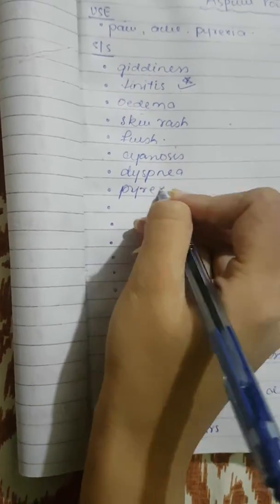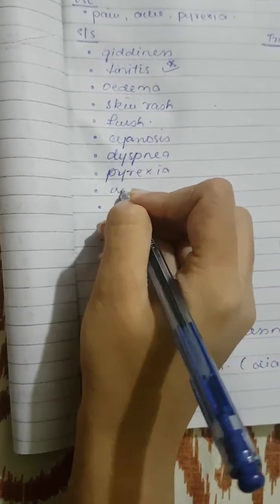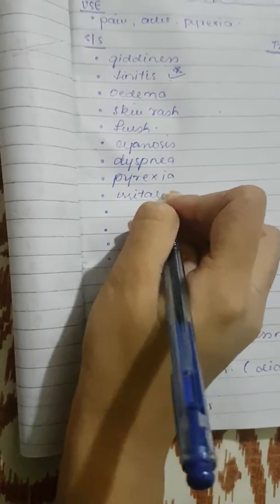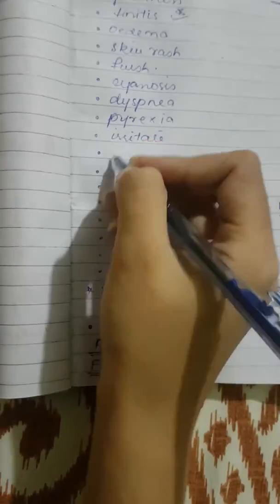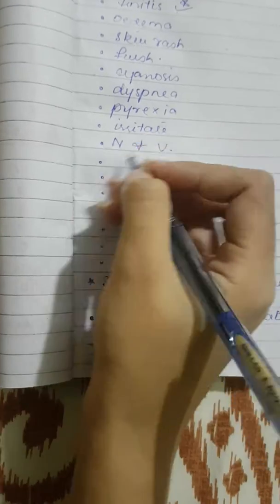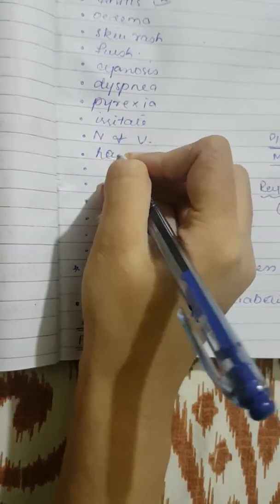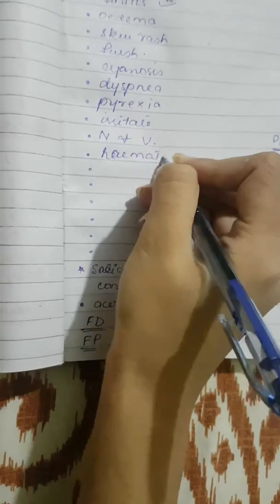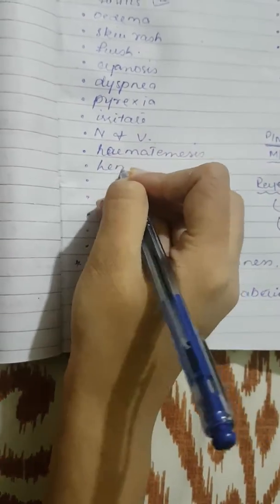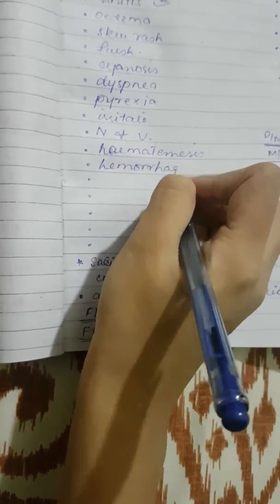It may also irritate the GIT mucosa, nausea and vomiting, there may be hematemesis, there may be hemorrhage which may prove fatal in the end.